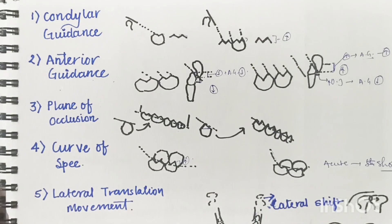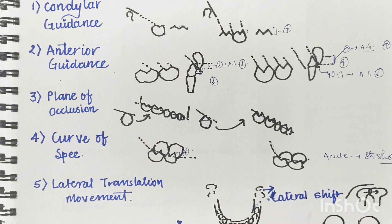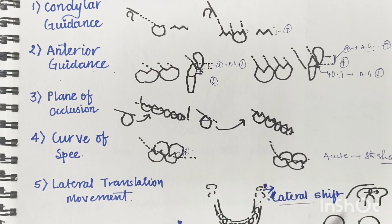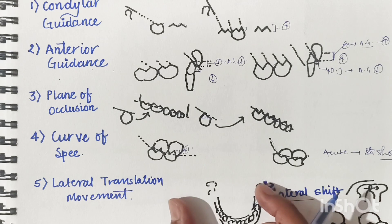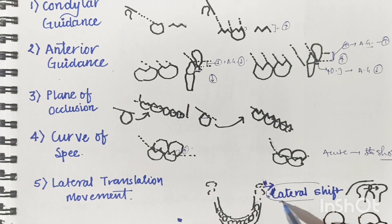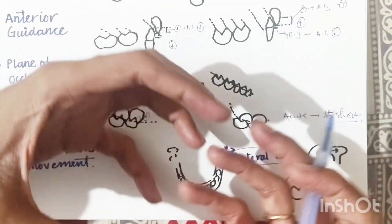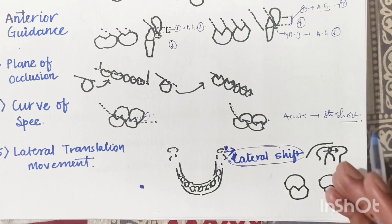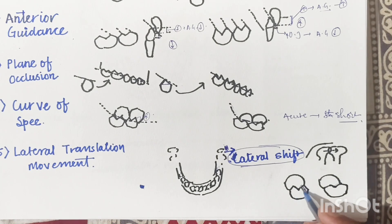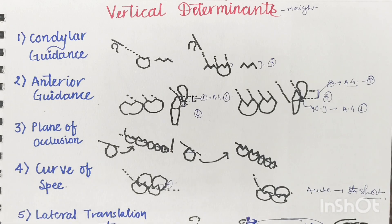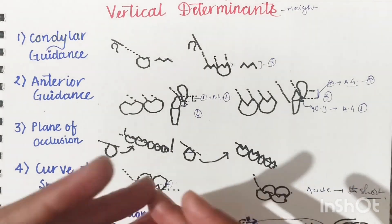If the curve of Spee is very acute or sharp, shorter cusps must be provided, otherwise they cannot slide with each other. The fifth vertical determinant is lateral translation movement, which depends on the temporomandibular ligament's inner horizontal component. If that ligament is loose, the mandible shifts more laterally, requiring shorter cusps to allow freedom of movement. If lateral shift is minimal, sharper and taller cusps can be provided. These are the vertical determinants of occlusal morphology for posterior teeth.